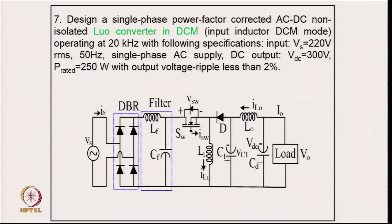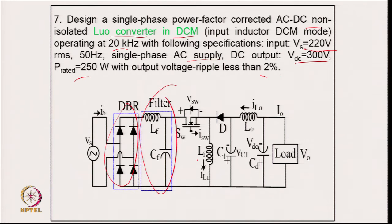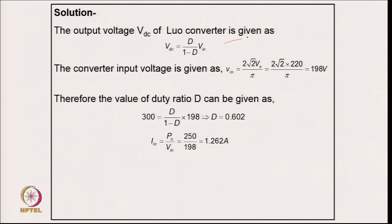Example 7: design a single phase power factor corrected AC-DC non-isolated Luo converter operating in discontinuous conduction mode at 20 kHz. Specifications: 220 V, 50 Hz single phase AC supply, DC output 300 V, rated power 250 W, output voltage ripple 2 percent. The typical circuit: after the diode rectifier we have an EMI filter followed by the Luo converter with an output capacitor. The output voltage relation is V_dc = V_in × D/(1−D), so this is also a buck-boost type converter.